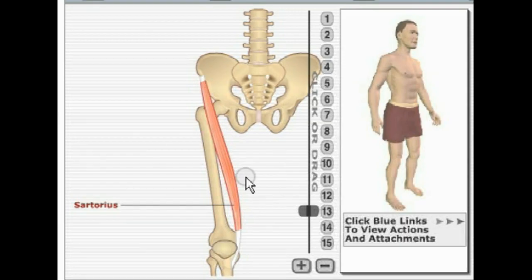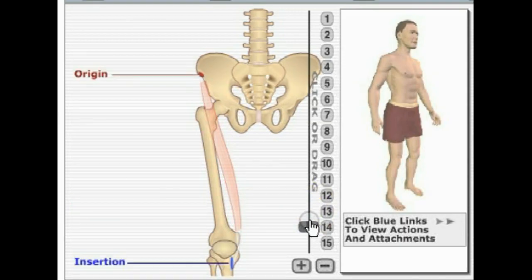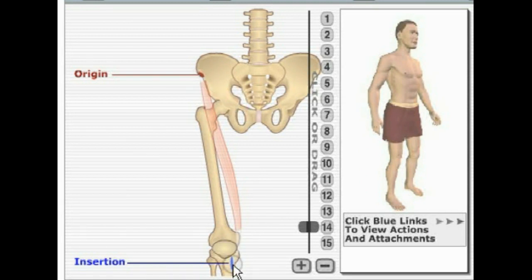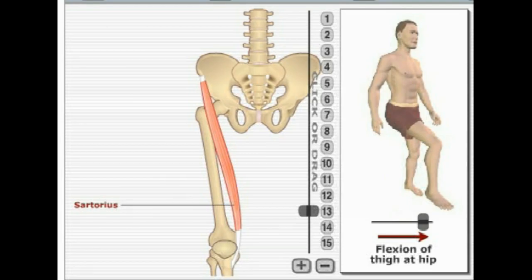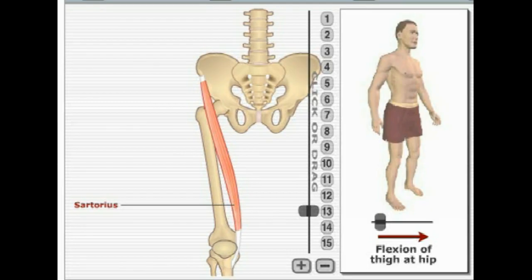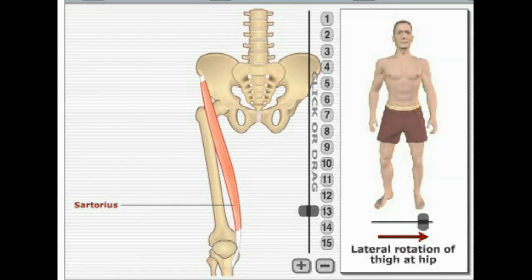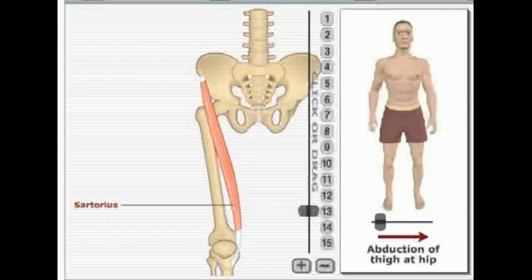Here we have the sartorius muscle. It originates on the anterior superior iliac spine of the ilium and inserts on the proximal medial surface of the tibia. Its primary actions are flexion of the thigh, lateral rotation of the thigh, and abduction of the thigh at the hip.